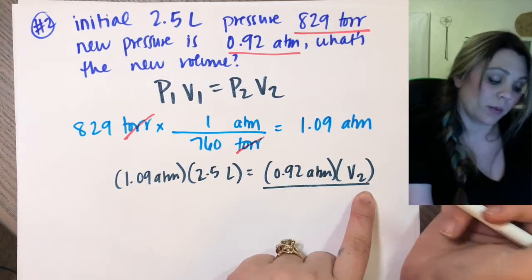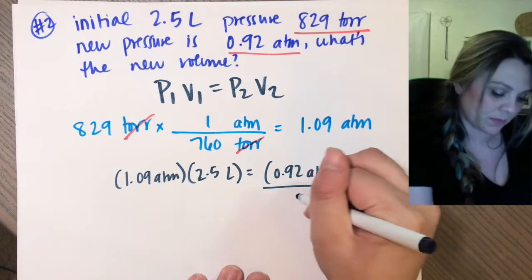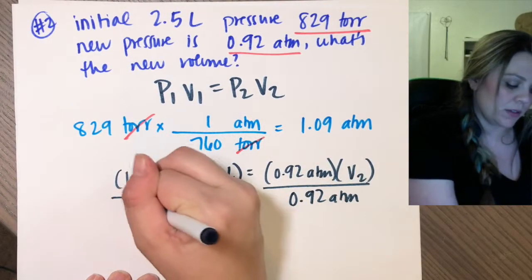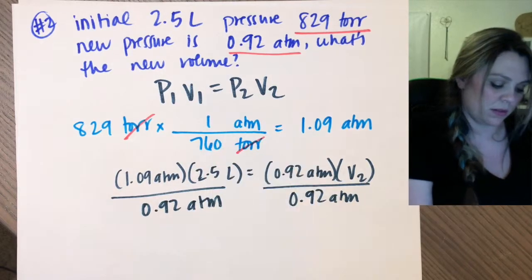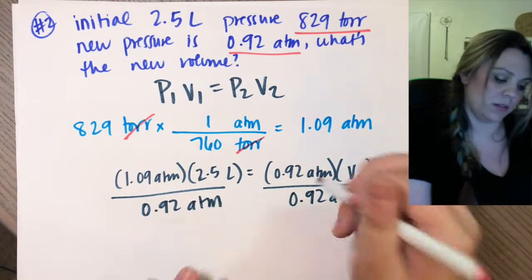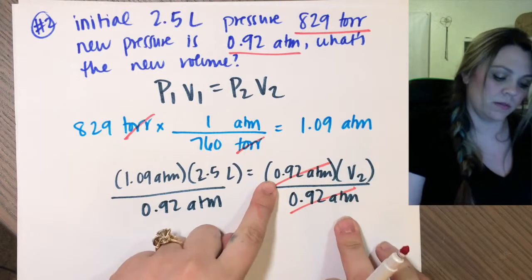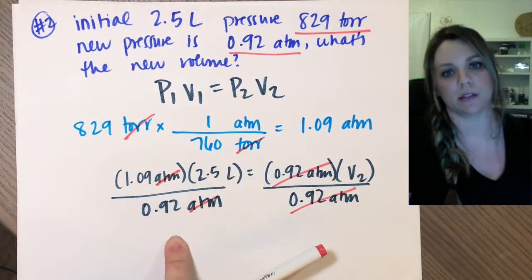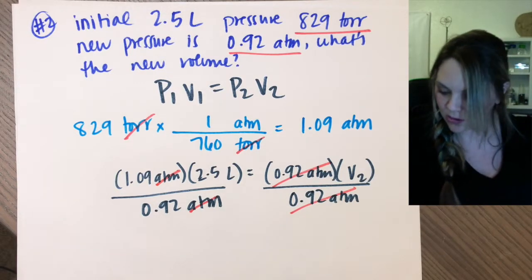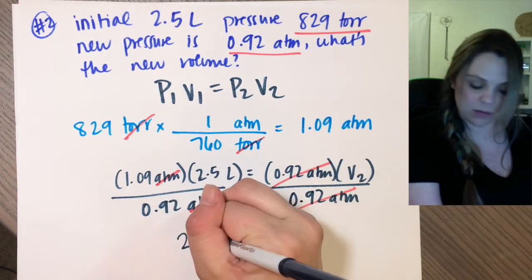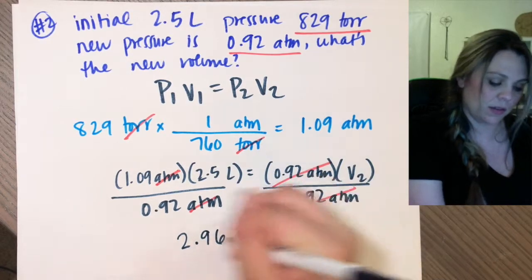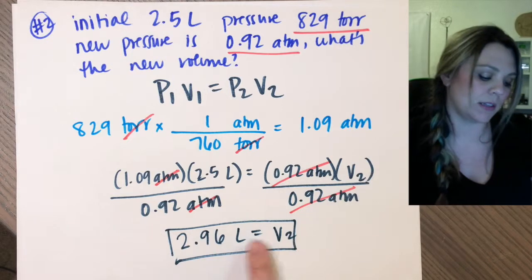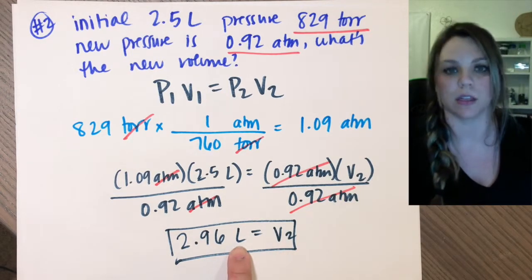To solve for my variable, I just isolate my variable. That's what I'm solving for. So divide by 0.92 atmospheres. And these guys cancel out. Atmosphere and atmosphere cancel out. You'll plug in some numbers into your calculator. And you get 2.96 liters is your final volume. And that makes sense because I'm solving for volume and I get a unit in liters.